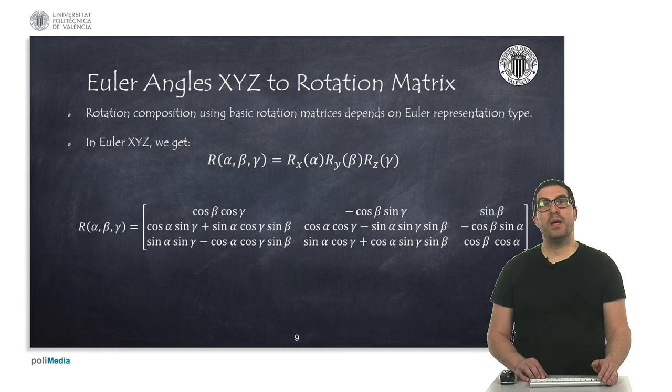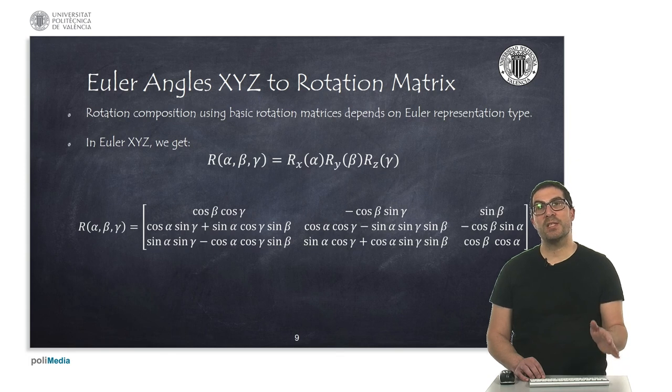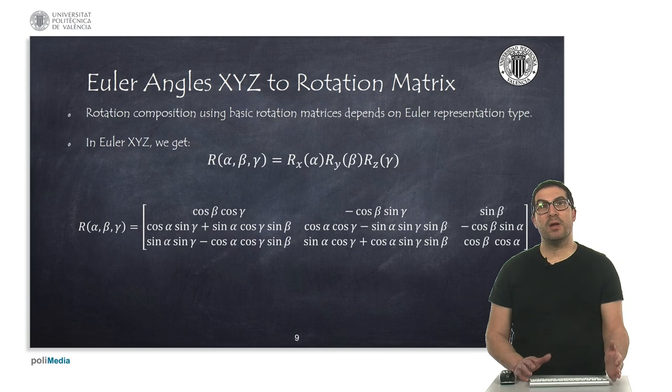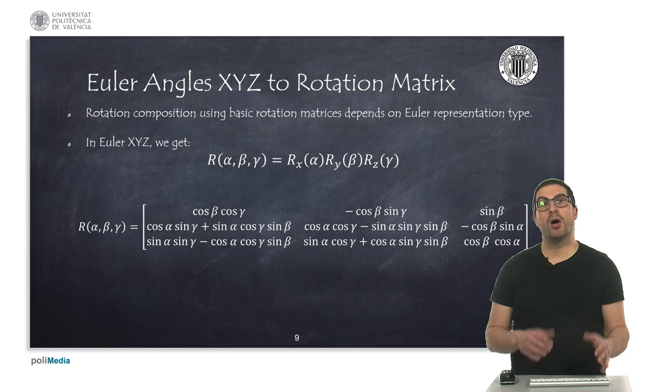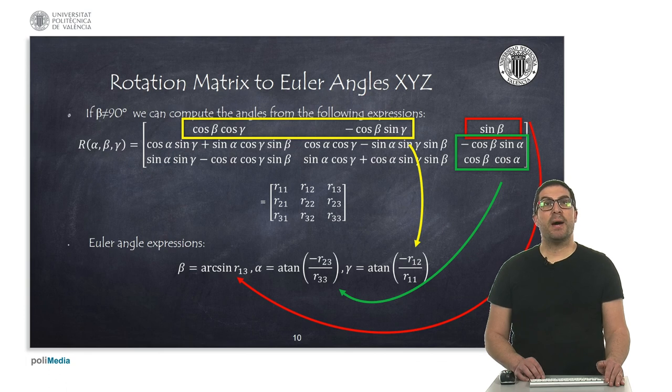To convert from a representation in Euler angles into a rotation matrix, we need to do the post-multiplication of sequential basic rotation matrices, as I indicated before. So depending on the specific representation, the rotation matrix will obtain a different symbolic expression. Here we show the symbolic expression for the representation X, Y, Z.